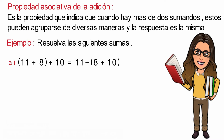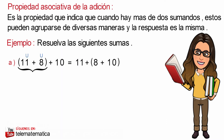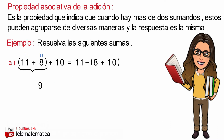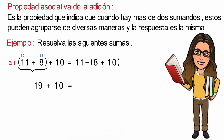Ahora vamos a resolver lo que se encuentra dentro de los paréntesis a ambos lados, comenzando por el lado izquierdo. Para ello identificamos la cifra de la unidad en los números y sumamos: 1 más 8 es igual a 9. Y la cifra de la decena la dejamos como 1, y nos quedaría 19 más 10.